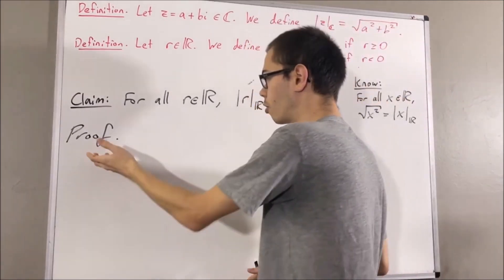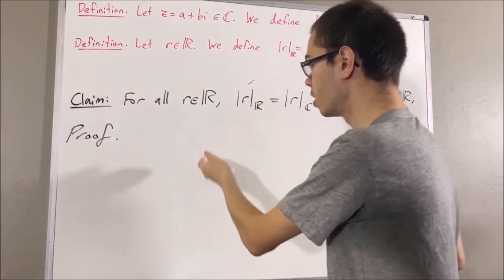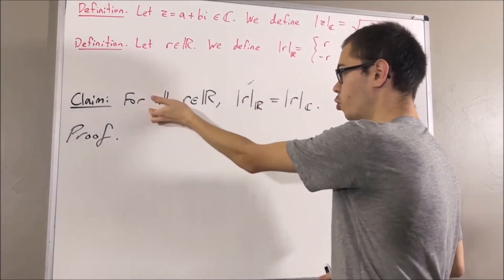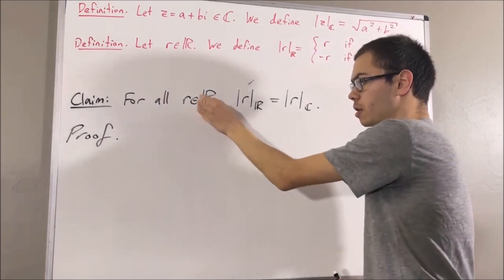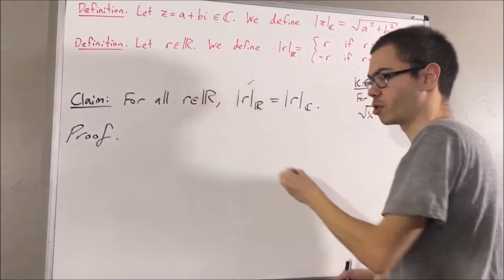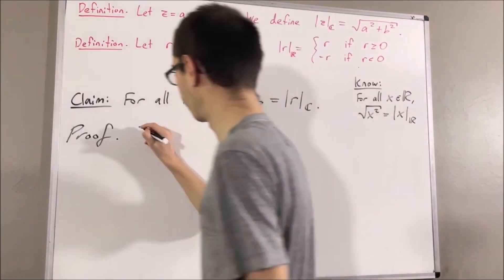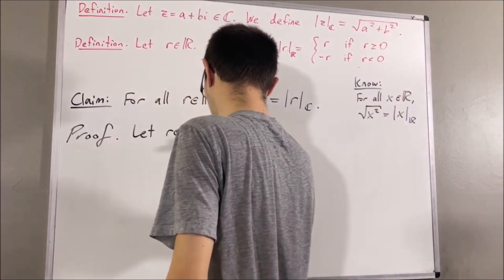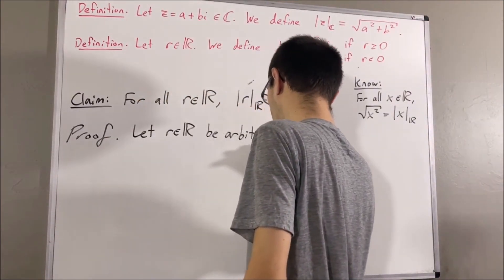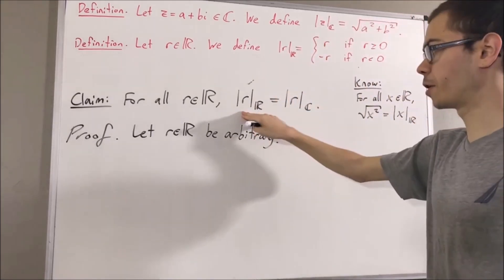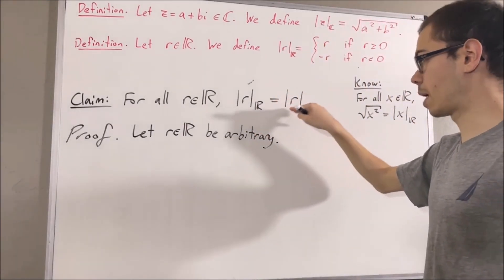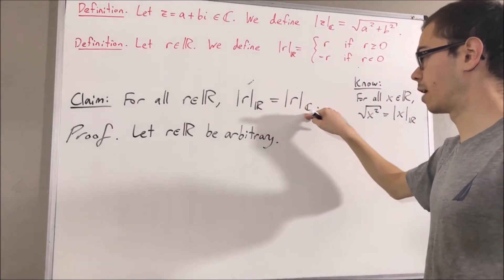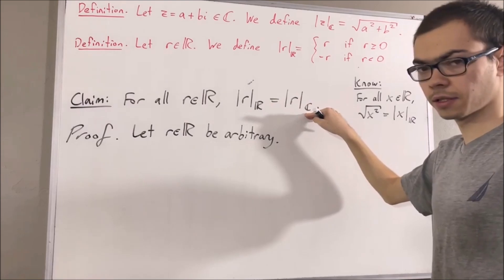To prove our claim, since we're trying to prove a statement about every real number, let's give ourselves an arbitrary real number. From here, we want to prove that the absolute value of r in the real sense is equal to the absolute value of r in the complex sense.